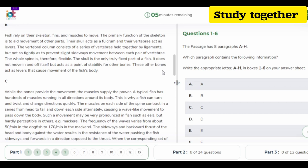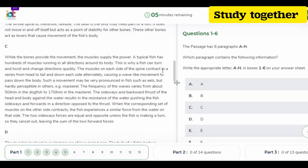Keep in your mind that you do not have much time, just read it as fast as you can. The next paragraph is: fish rely on their skeleton, fins, and muscles to move. The primary function of the skeleton is to aid movement of other parts. Their skin acts as a fulcrum and their vertebrae act as levers. The vertebral column consists of a series of vertebrae held together by ligaments.